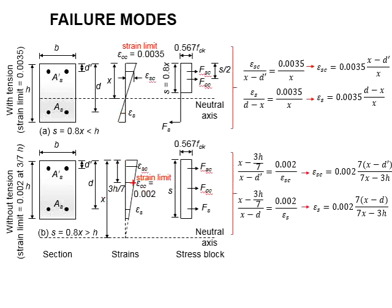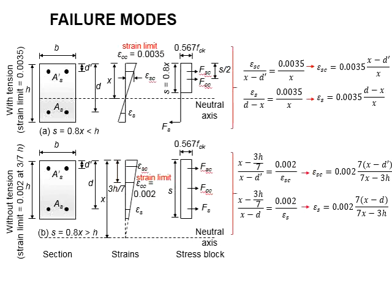We are now looking at these triangles. To be more precise, if we want to obtain the strength in the compression steel, we are looking at these two sets of triangles.